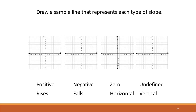If I wanted to draw a positive slope, it rises, going in an upward direction. If I want to draw a line with a negative slope, it's going to be falling. A slope of 0 is a horizontal line. And then we have what's called an undefined slope, which occurs when we have a vertical line.